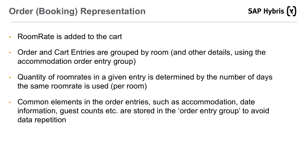The right to stay in a specific accommodation is the product that the user adds to the cart, called a room rate. Order and cart entries are grouped by room and other details using the accommodation order entry group. The quantity of room rates in a given entry is determined by the number of dates the same room rate is used per room. Common elements in the order entry such as accommodation, date information, and guest counts are stored in the order entry group to avoid data repetition.